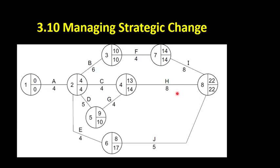The critical path in this example is the one where all the numbers are the same. This implies there is no float time between the earliest time that this could start and the latest time it could finish. In other words, you've got to do these activities where the numbers are the same in order for the project overall not to be delayed. So that's the critical path — in this case, A, B, F, I.